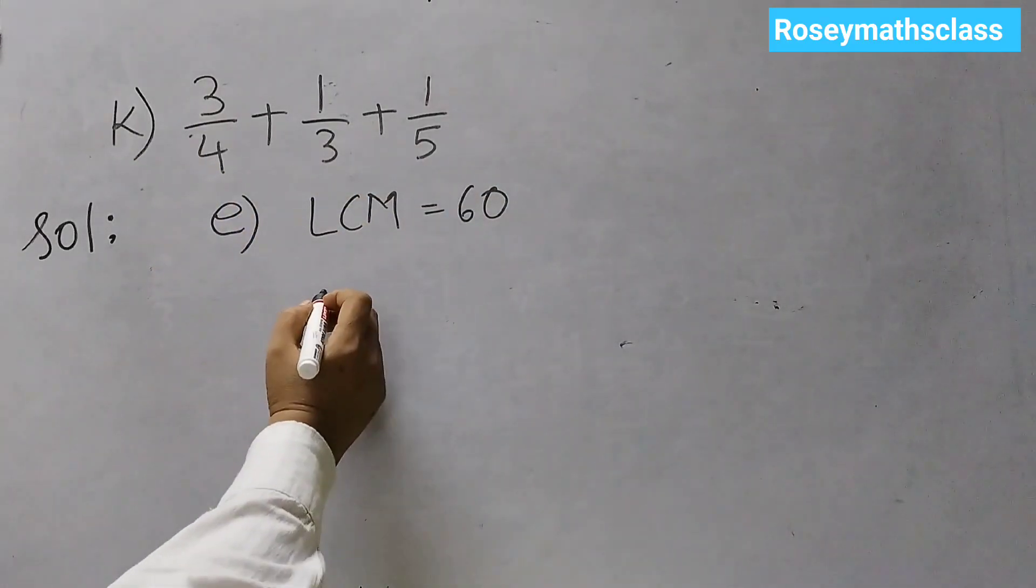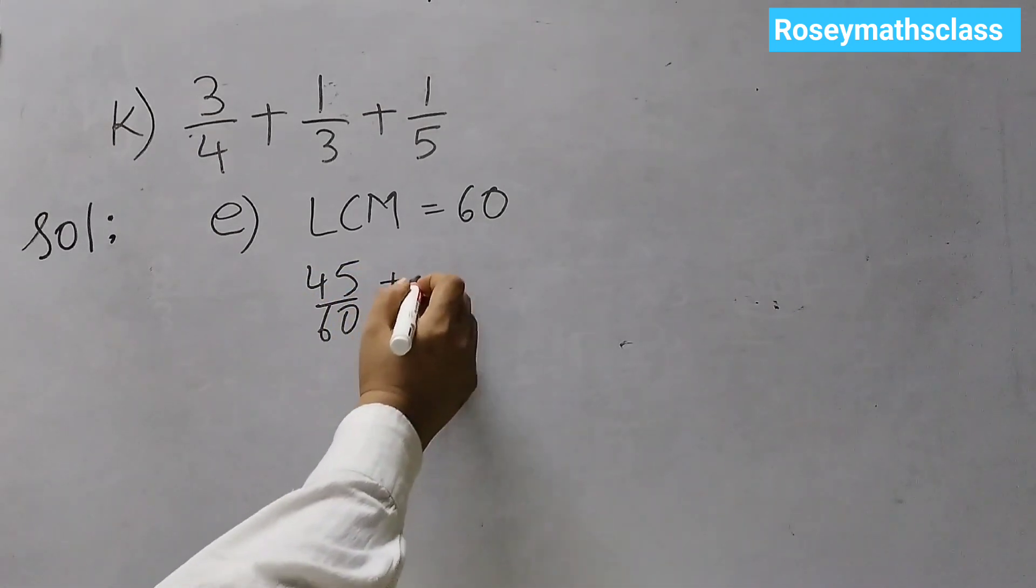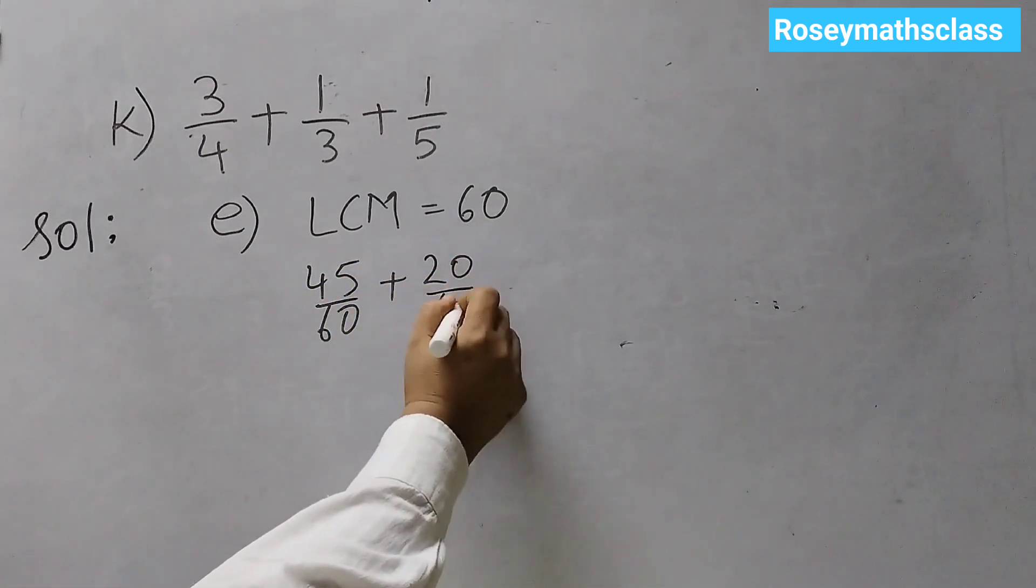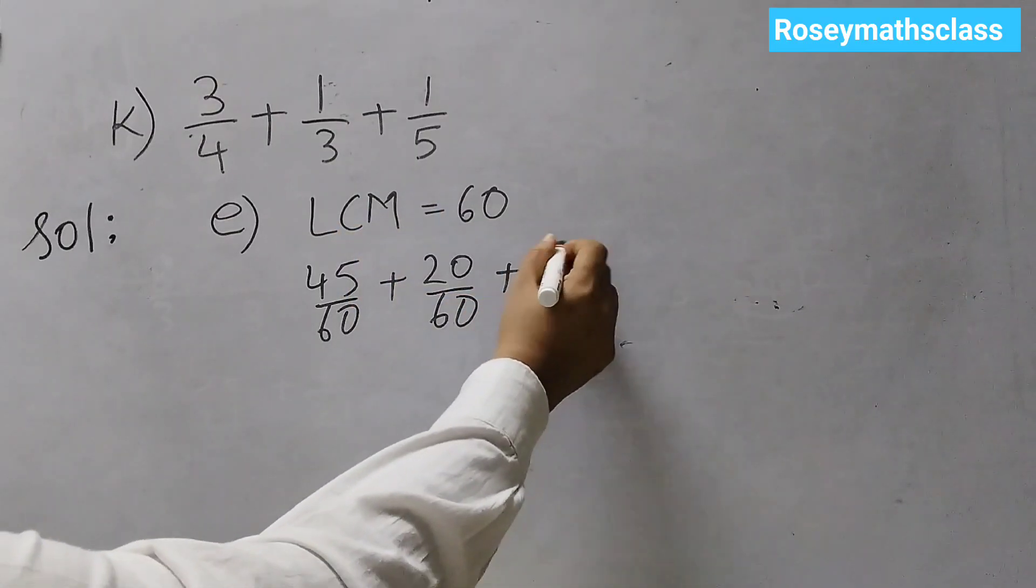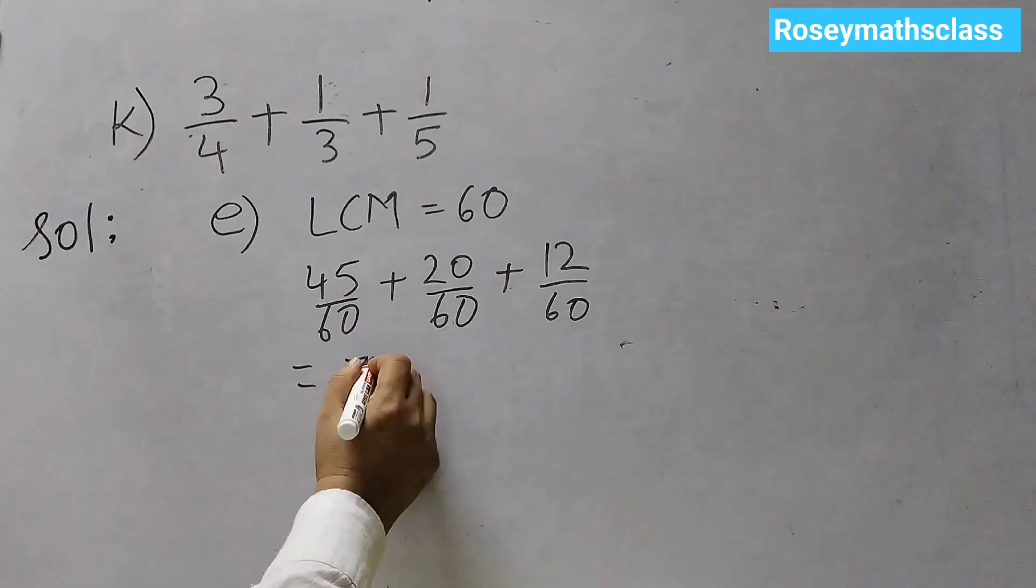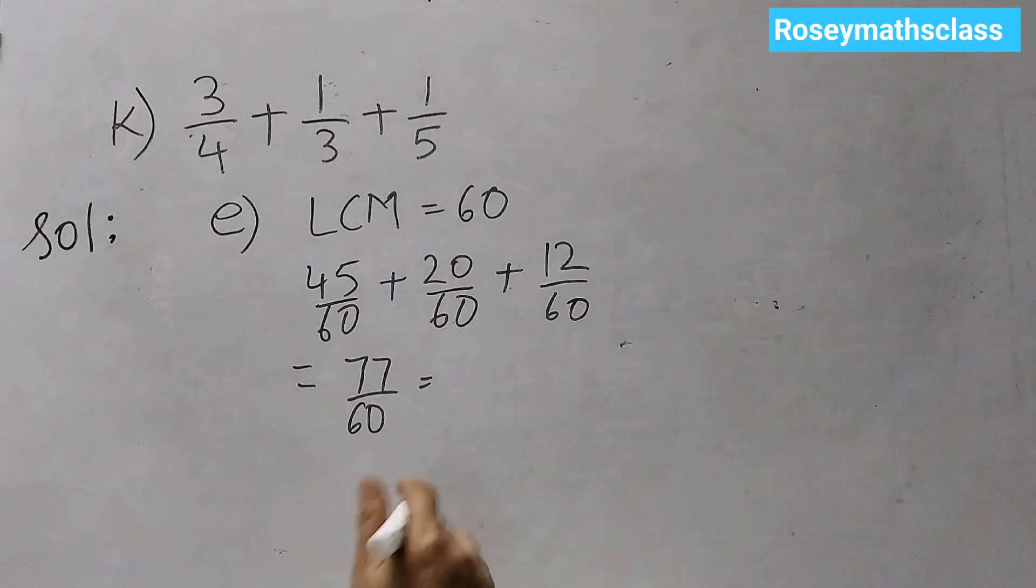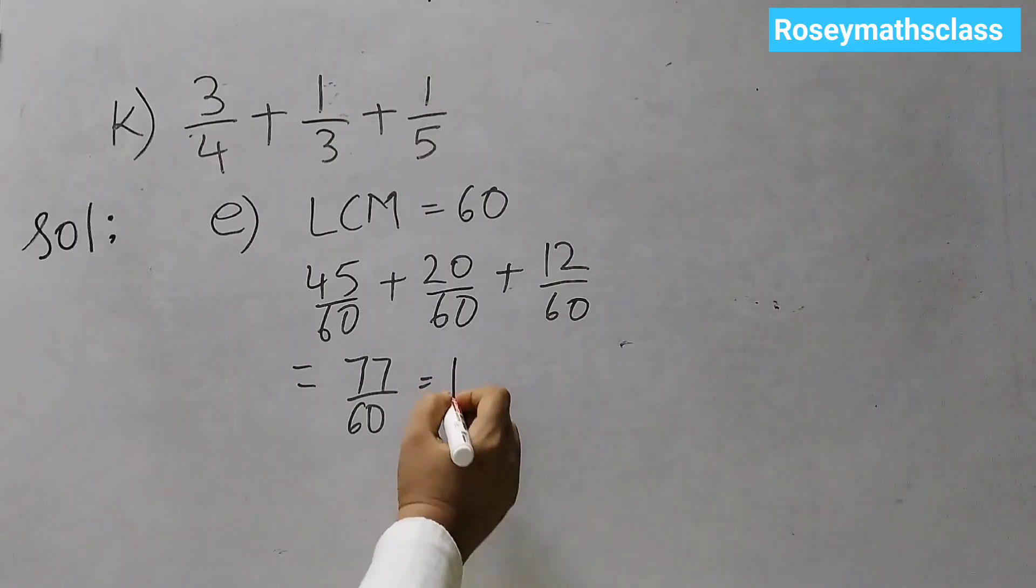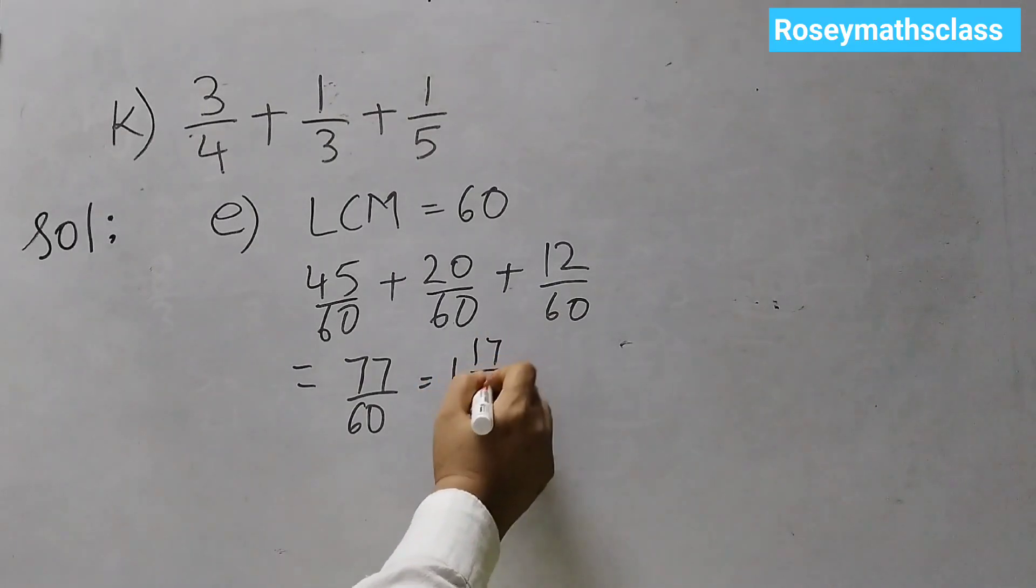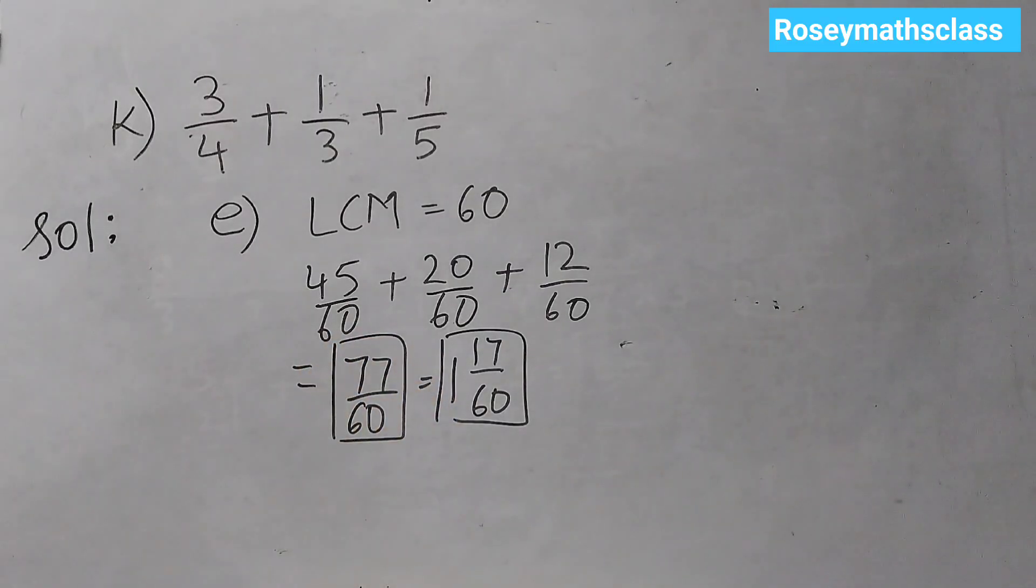The LCM is 60 in this case. 3 by 4 would become 45 by 60 plus 1 by 3 would become 20 by 60 plus 1 by 5 would become 12 by 60. And then when you add it up, you would get 77 by 60. Or we can convert it to a mixed number, that would be 1 whole 17 over 60. Here, I have not explained how to do it because I have already explained when I was discussing E.